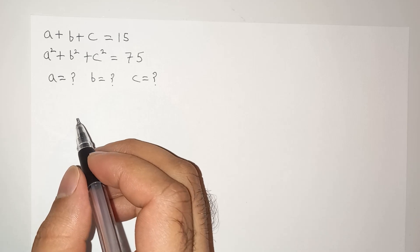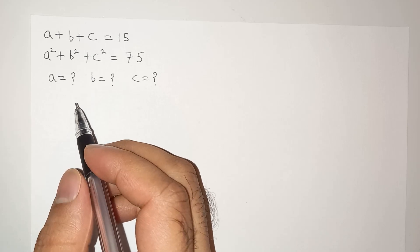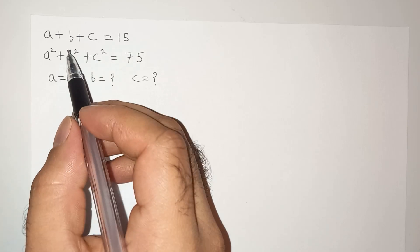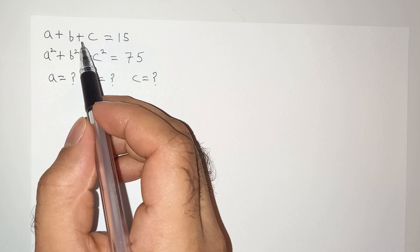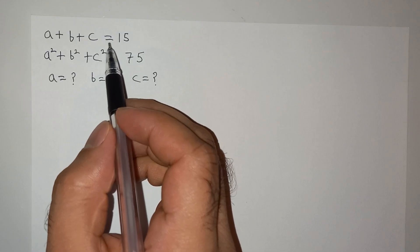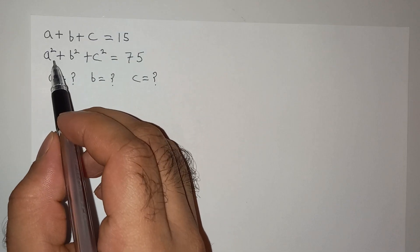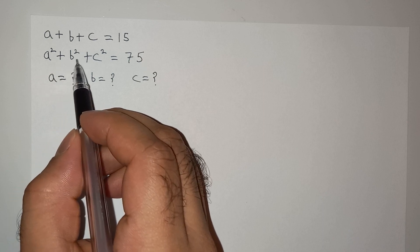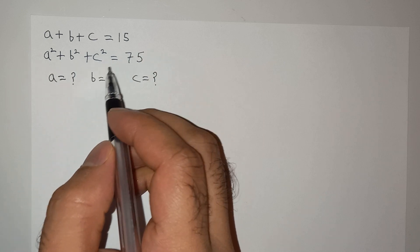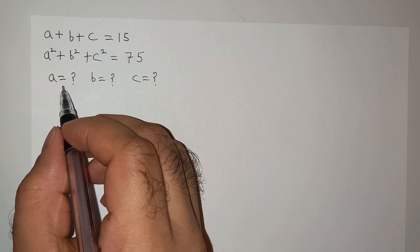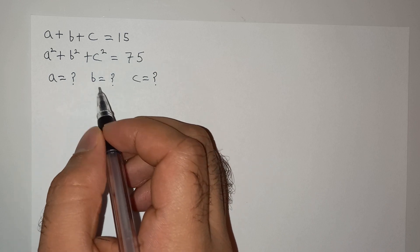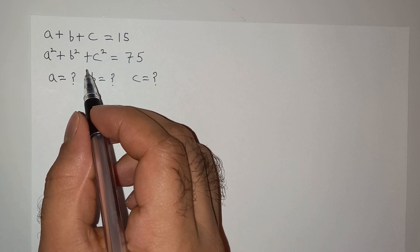Hi guys, we are going to solve an interesting question today: a plus b plus c equals 15, and a squared plus b squared plus c squared equals 75. We have to find the value of a, b, and c. How do we solve this question?